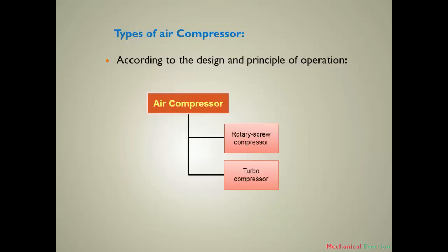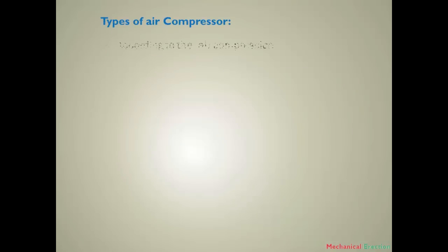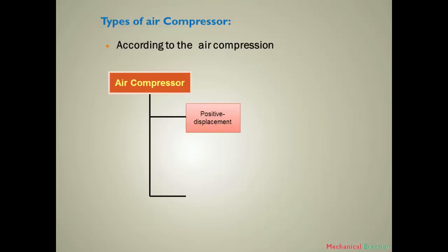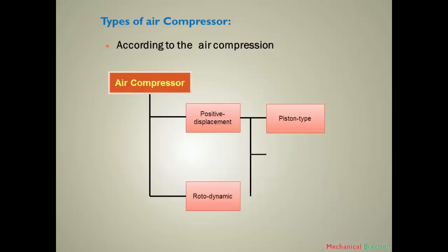Air compressors may also be classified according to the air compression ratio, and can be divided into two types. The first is the positive displacement air compressor, which may be further classified into three types: piston type, rotary screw type compressor, and vane type compressor.